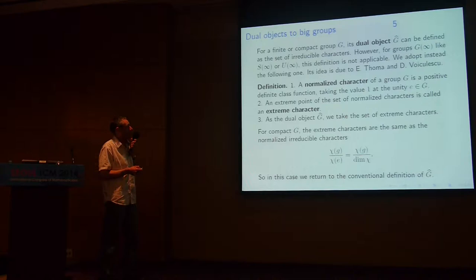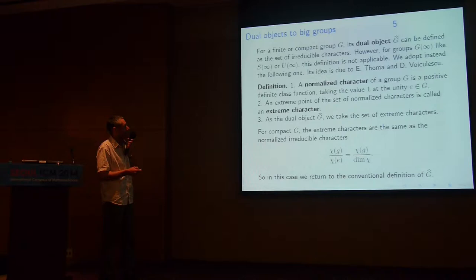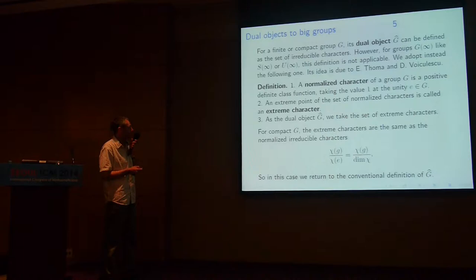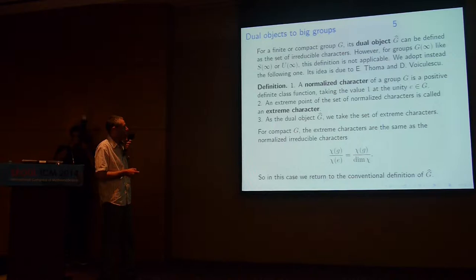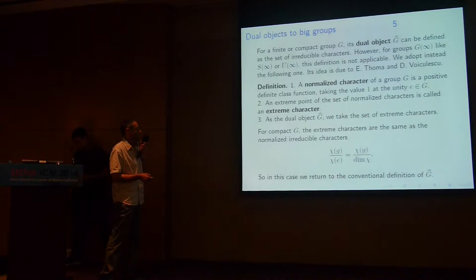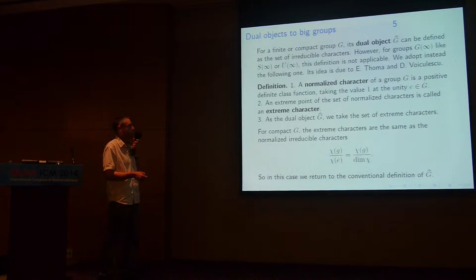First, we define a normalized character for an arbitrary group G: this is a positive definite class function normalized by the condition that it takes the value one at the identity. Second, we observe that normalized characters form a convex set. An extreme point of the set of normalized characters is called an extreme character. As the dual object G-hat, we take the set of all extreme characters. In the case of a compact group, the extreme characters are exactly the normalized irreducible characters — irreducible character divided by the dimension — so in this case our definition is essentially the same as the conventional one.